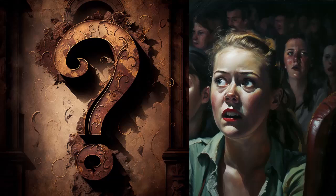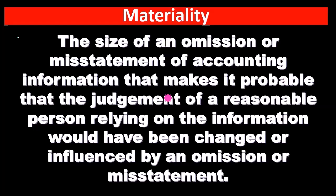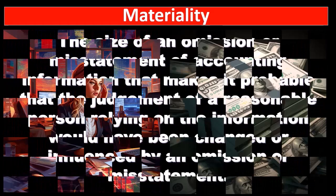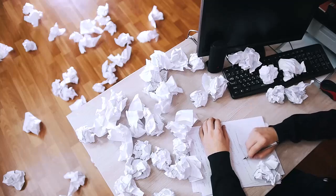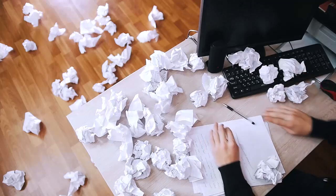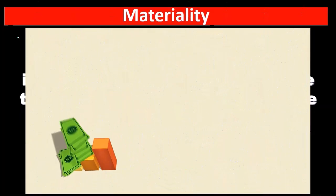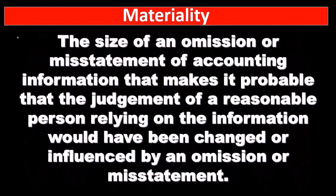We're always going to see the term materiality, and when we think about the financial statements, it carries the same 'reasonable person' standard. The end users — typically investors — are who we're thinking about. We want to make sure there's not a material misstatement, reducing the likelihood that investors would make decisions, like choosing to invest, that they would not have made had that mistake not been present. That's essentially what we mean by materiality.